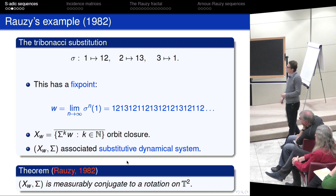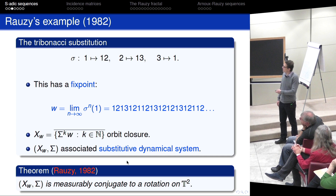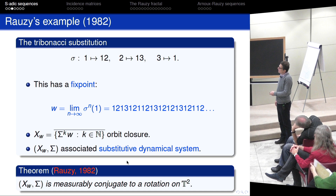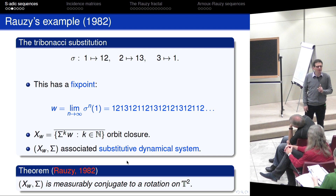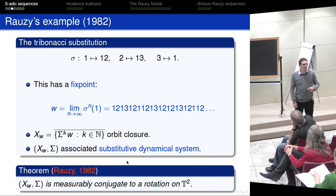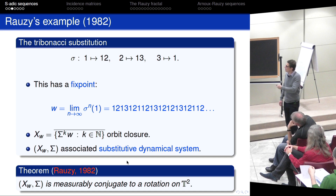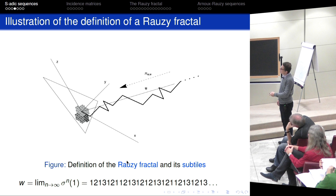Now we want to generalize this. Before doing so, I want to give you just a picture — or two pictures — of how Rauzy proved this. What he did is: if you look at this word, you can associate with each letter one coordinate direction in R^3. So one is the first basis vector, two is the second, three is the third. Using this infinite word, you can build a broken line — whenever you read one you go in one direction, two in another, three in another — and I visualize this broken line here.